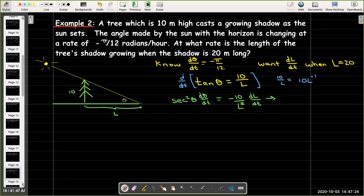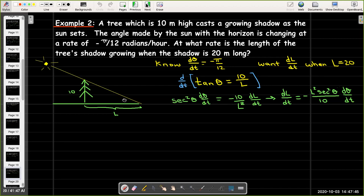Now, I'd like to solve that for dL/dt. So, dL/dt would be negative L squared secant squared theta all over 10. Again, I don't know theta, but I'm not even going to try to find theta. What I'm going to try to do is find secant of theta using my trig ratios.